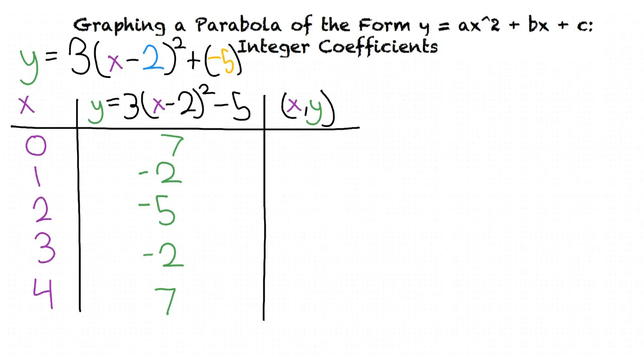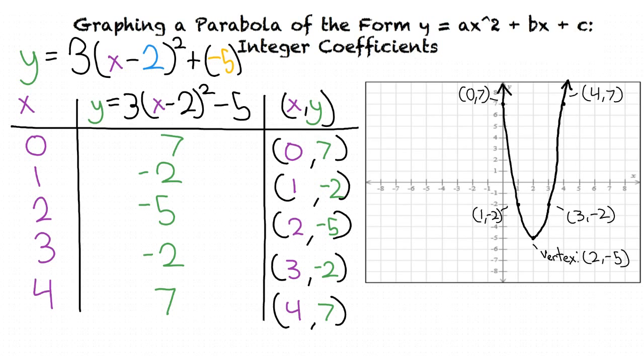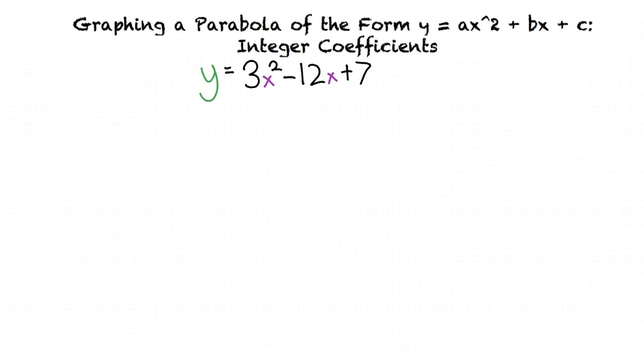Our parabola contains the points (0, 7), (1, negative 2), (2, negative 5), (3, negative 2), and (4, 7). With our points plotted, we can now graph our parabola to get our final answer.